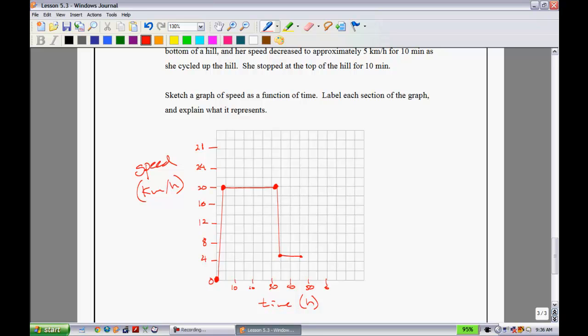Alright, the last part of Sarah's journey says she stopped at the top of the hill for 10 minutes. So it means she was just traveling at 5 km an hour for 10 minutes, and then she got to the top of the hill and was going to stop. So that means that her speed must have come down to 0 right here. So we're going to have something look just like so.